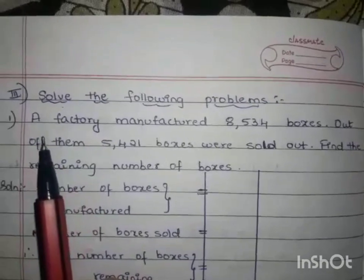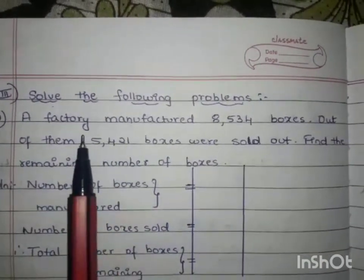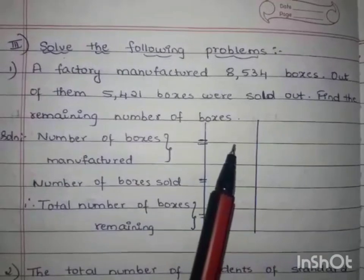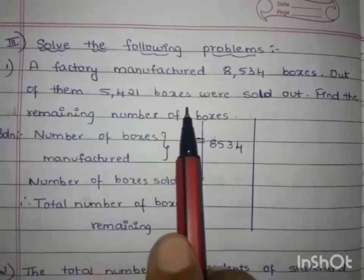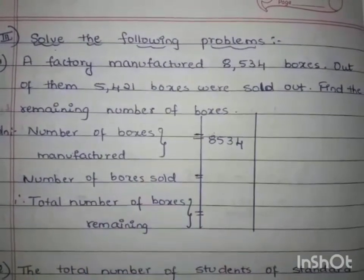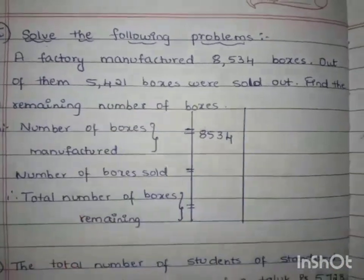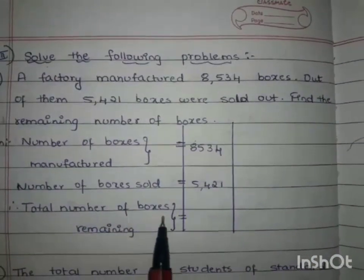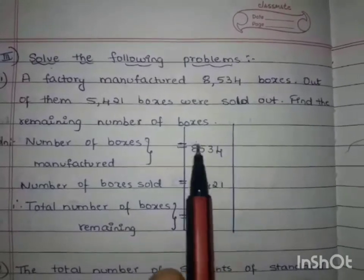The first sentence given: a factory manufactured 8,534 boxes. So the number of boxes manufactured by the factory is 8,534. We will write it down: number of boxes manufactured is 8,534. Then the next statement: out of them, 5,421 boxes were sold out. Number of boxes sold is 5,421. Therefore, the total number of boxes remaining will be 8,534 minus 5,421. We have to subtract these two numbers.